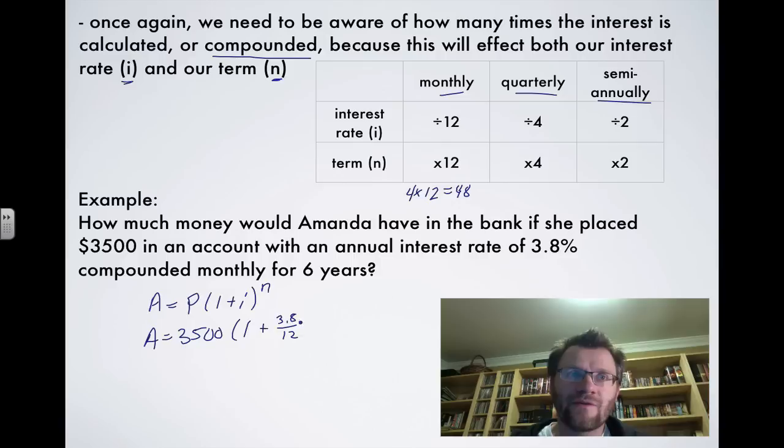Now, if you wanted to, you could do this on the side and figure out what that is, but it's just a crazy decimal. It's 0.0031667, blah, blah, blah, blah, blah. But our N, we know, is 6 months, monthly for 6 years, sorry, and that would be 72, that's 6 times 12. So when you put this in your calculator, you'll find out that Amanda ends up having $4,394.73 in her bank account.